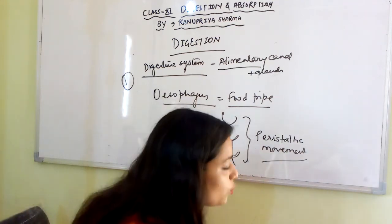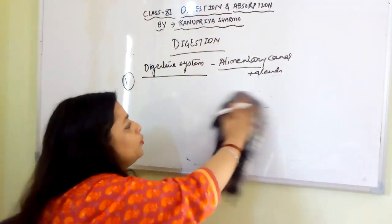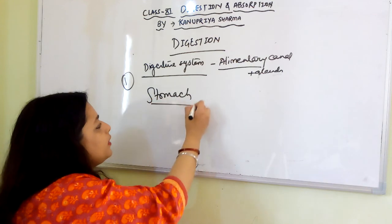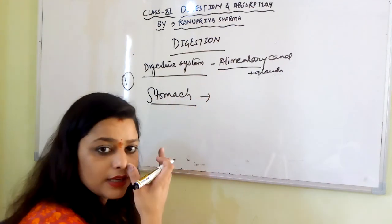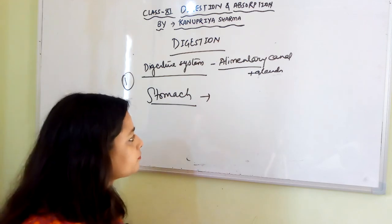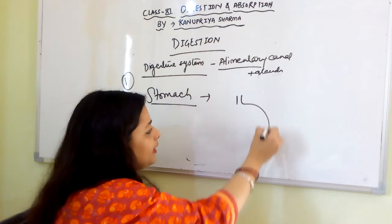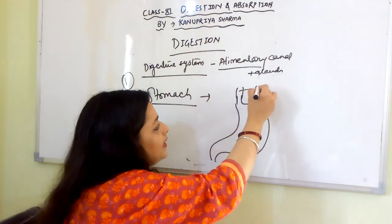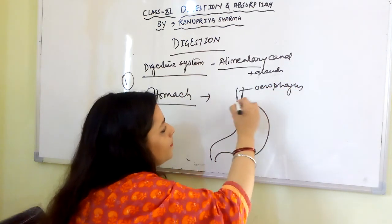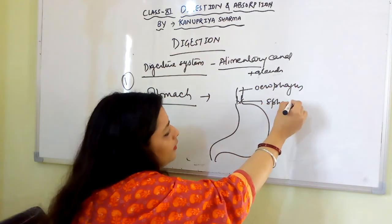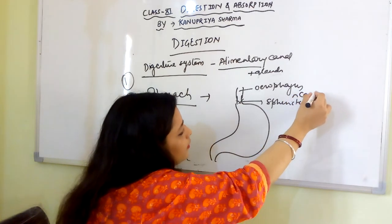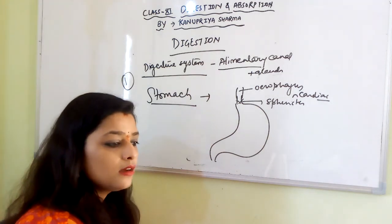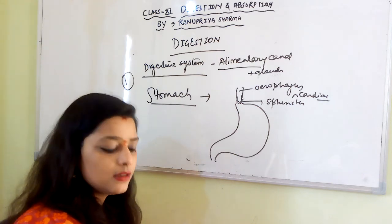There are portions having sphincters. The next organ is the stomach — a J-shaped organ after the food pipe. At the entry from the esophagus there is the cardiac sphincter, also known as the gastroesophageal sphincter, which acts like a door ensuring a regulated amount of food enters the stomach and food doesn't move back into the esophagus.